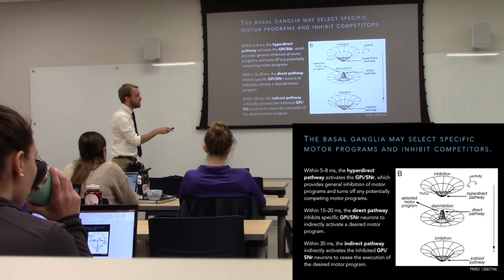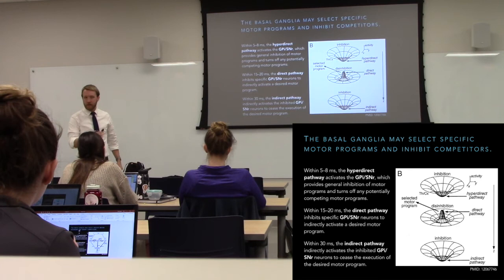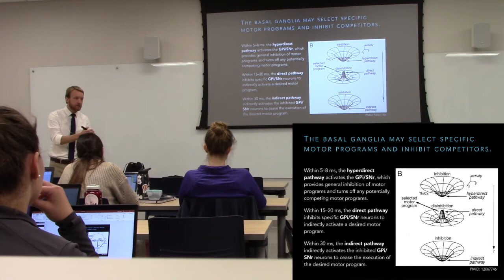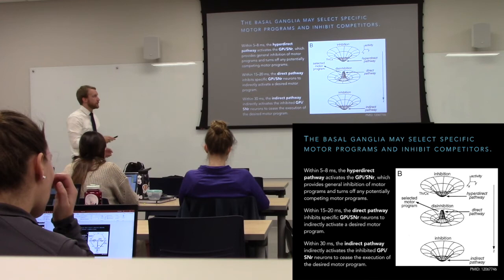Then focal excitation — notice a very distinct peak surrounded by inhibition. All that inappropriate stuff: don't do that, do that one thing I want you to do. And then the indirect pathway comes in afterward to silence that. So we make our decision to carry out the action and then we move on to something else. General inhibition, focal excitation, general inhibition.